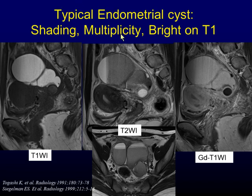Multiplicity of hyper-intense cysts on T1-weighted image is another typical finding. Repeated bleeding results in the formation of new blood lesions, making more cysts with high signal intensity on T1. Administration of contrast material does not provide additional information for evaluating endometriotic cysts.